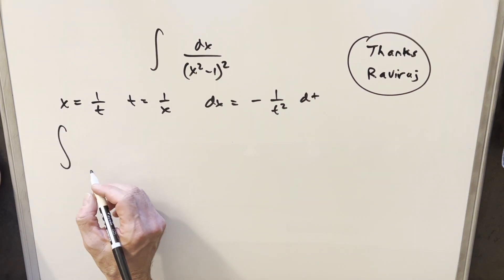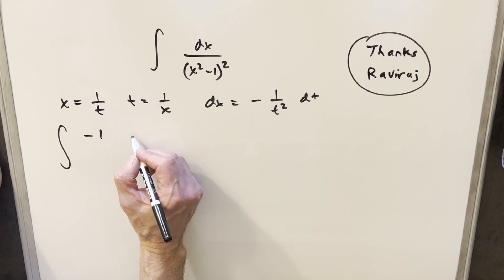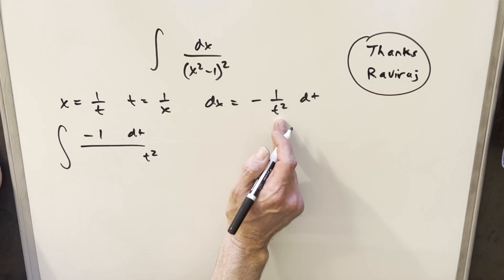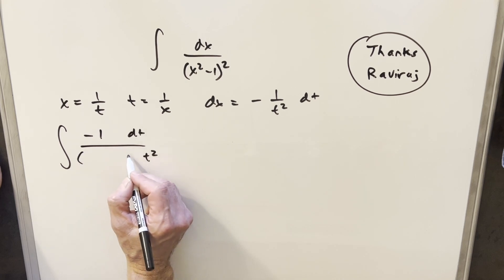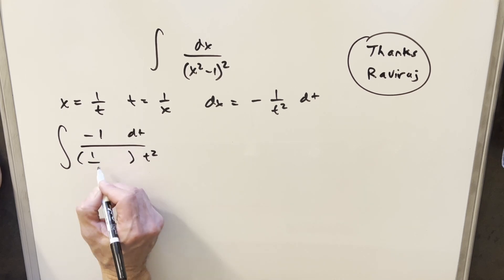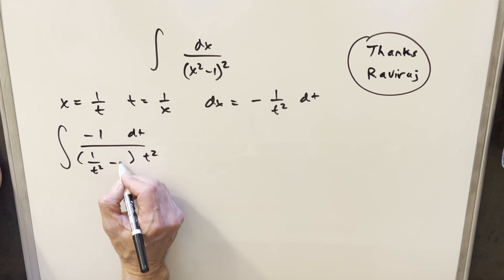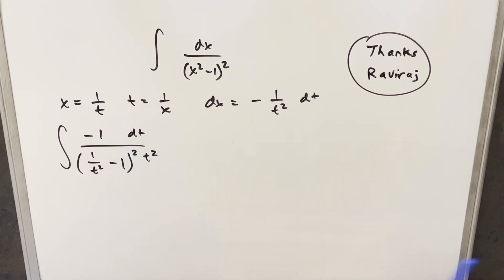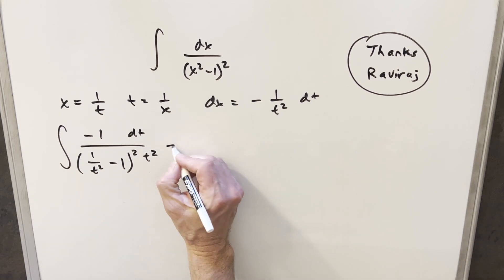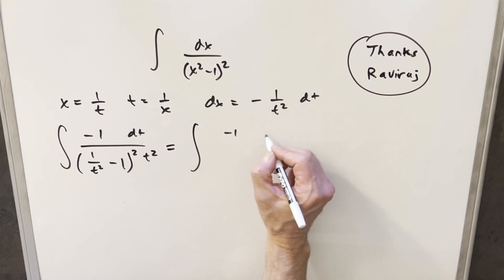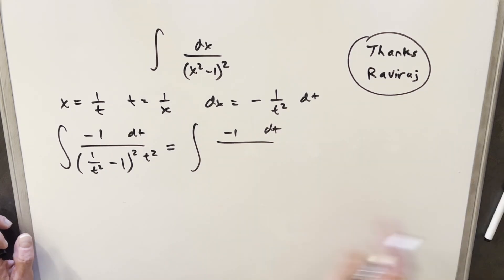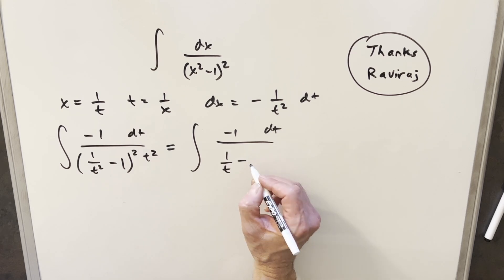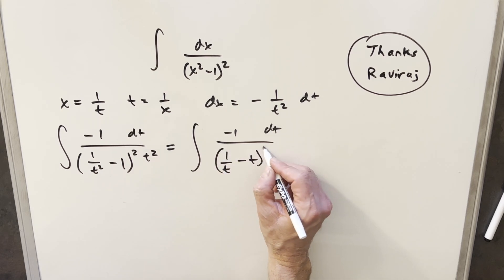So I'll go ahead with this. I'm going to write the minus 1 in the numerator, dt. Then I'm going to bring the t squared over and distribute it into what we have here. This is going to become 1 over (1/t squared minus 1). I'll distribute it in, so we still have minus 1 dt in the numerator. Because both terms are squared, I multiply in as a t and get 1 over (1/t minus t) all squared.